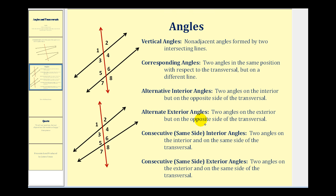Alternate exterior angles are two angles on the exterior, but on the opposite side of the transversal. So the angles in the exterior are angles one, two, seven, and eight. And since angle one and angle eight are on the opposite side of the transversal, these are alternate exterior angles, as well as angle two and angle seven.